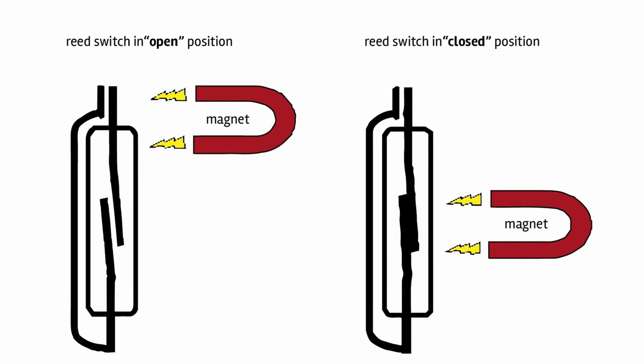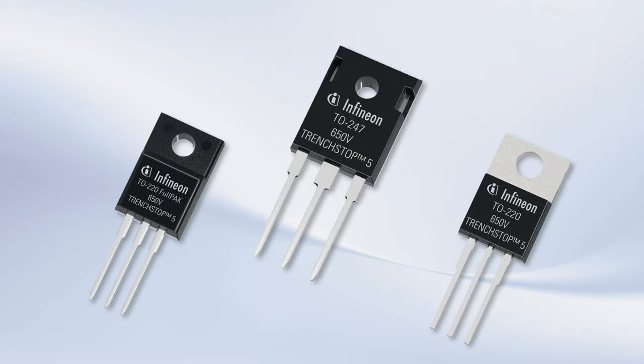A reed switch is also a good option as it can handle high voltages but it is limited in its switching speed. Since these do not have internal body diodes like a MOSFET has, we need to add a parallel diode to the switch. IGBTs are also able to switch fast but they are much slower in opening than a MOSFET, which makes them less suitable.